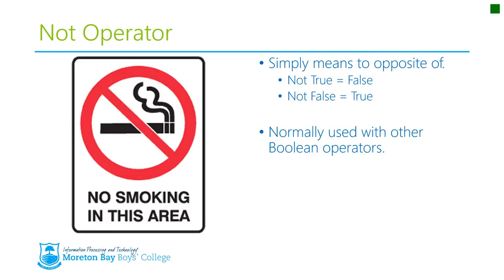The last operator is NOT. NOT basically means the opposite: not true equals false, and not false equals true. It's normally used in conjunction with other Boolean operators. You just need to know it exists, and it'll make more sense when we start programming with it.